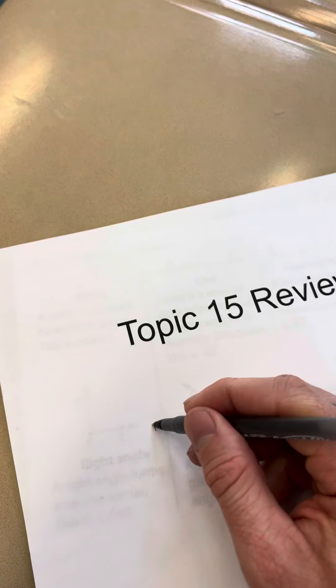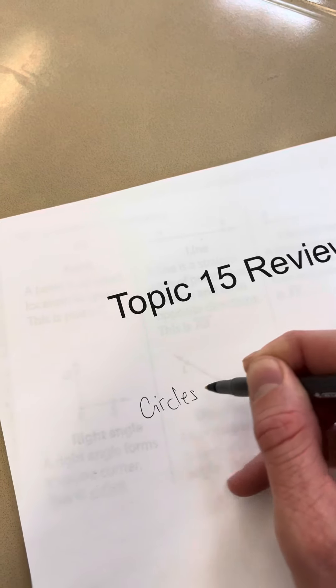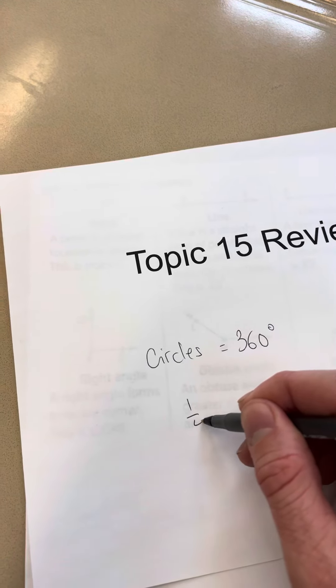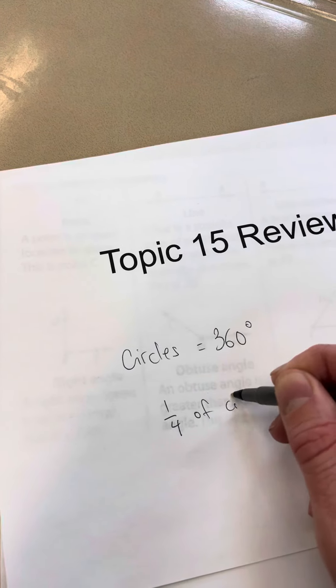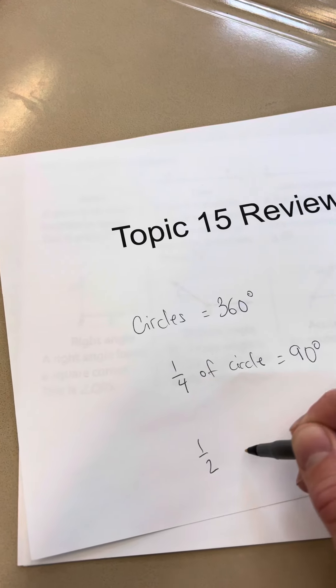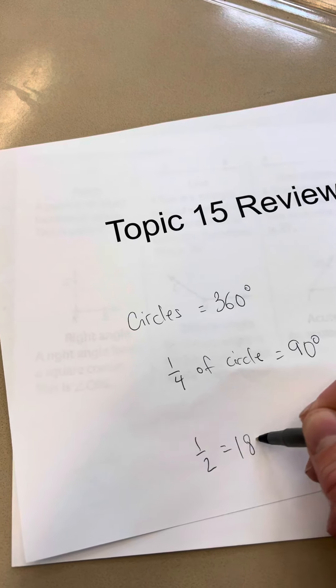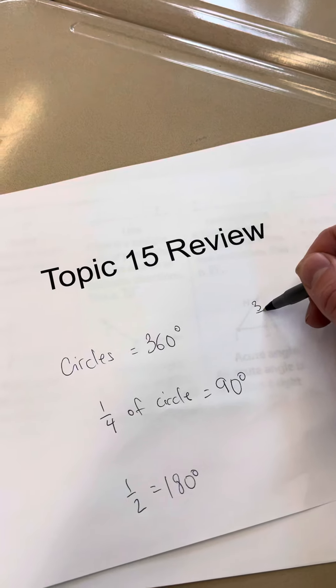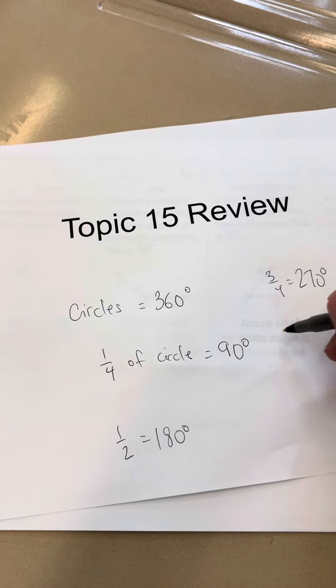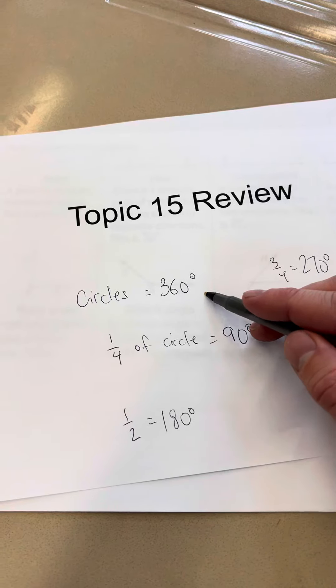Circles are 360 degrees. One quarter of a circle is a 90 degree angle. One half is 180, three quarters are 270 degrees, and we know four fourths or one whole circle is 360.